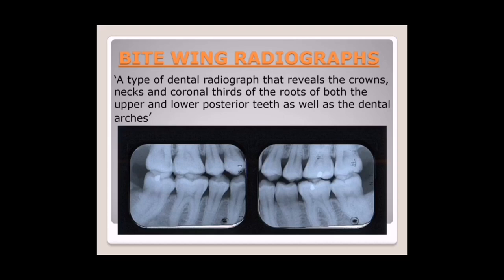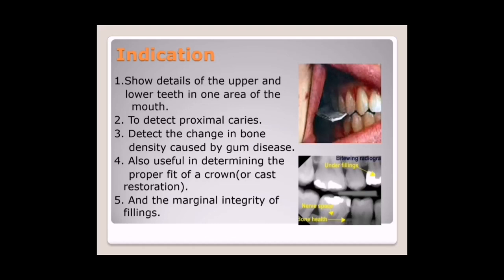First, we discuss bitewing radiographs — a type of dental radiograph that reveals the crowns, neck, and coronal third of the root of both the upper and lower posterior teeth, as well as the dental arches. Indications: number one, to show detail of upper and lower teeth in one area of the mouth; number two, to detect proximal caries; number three, to detect changes in bone density caused by gum disease; number four, useful in determining the proper fit of a crown or cast partial restoration; number five, to assess fillings and marginal integrity.